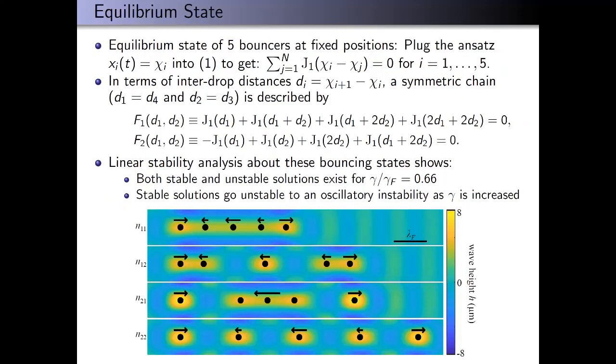We're going to consider equilibrium states of the drops just bouncing in place, not moving in the xy plane. To this end, we plug in the ansatz assuming steady state into the trajectory equation, and we get the system of five equations and five unknowns.